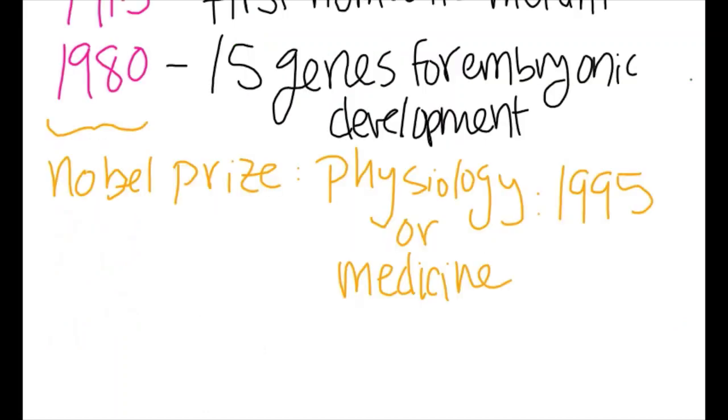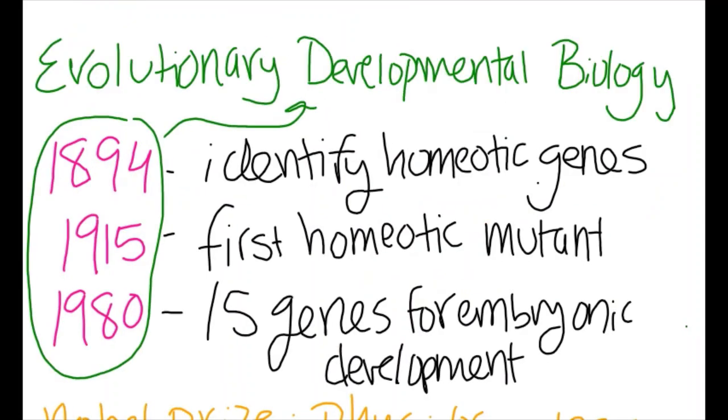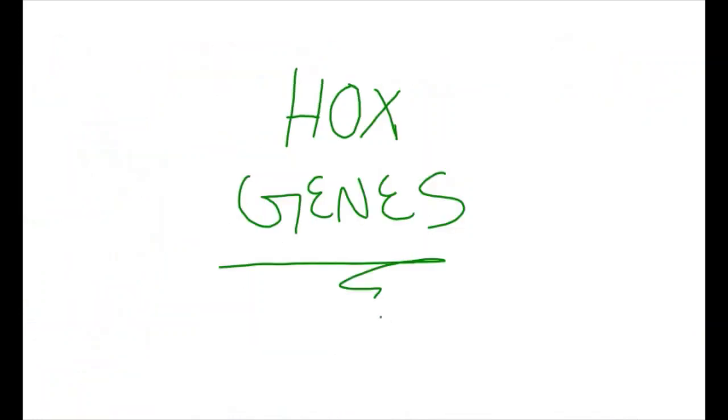These three scientists' work in 1980 was awarded the Nobel Prize in Physiology or Medicine in 1995. And because of all these years of research, we now have a greater understanding of Hox genes and their increasing importance in evolutionary developmental biology. I hope this video helped you to understand more about Hox genes.